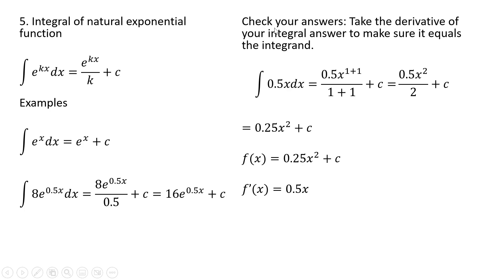As I mentioned, you can check your answers by taking the derivative of your integral answer to make sure it equals the integrand. Let's get the integral of 0.5x. Following the power function rule, we simplify this down to 0.25x squared plus c. That's our original function. If we take the derivative of it, 0.5x, we have what we have under the integrand. I will stop here.